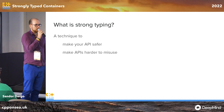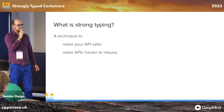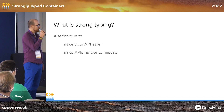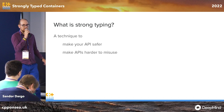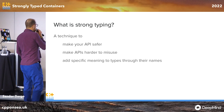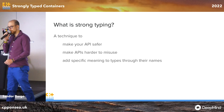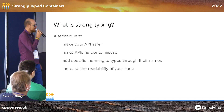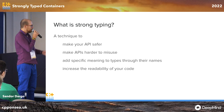Strong typing will make your API harder to misuse. If you attended CppCon last year, Matt Godbolt had a talk about how to write APIs that are hard to misuse — that's a very important topic. We will see how we can add specific meaning to our types through the names, and you will see that this vastly increases the readability of your code. Let's see an example.